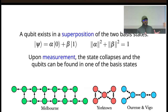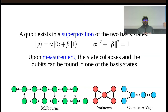A single qubit can be expressed as a superposition of the two basis states, 0 and 1, where each has an amplitude alpha and beta. When you measure them, the state collapses and the qubit can be found in one of those two basis states. The probability of measuring the 0 state is the norm of alpha squared, and the probability of measuring the 1 state is the norm of beta squared, so the norm of alpha squared plus the norm of beta squared adds up to 1.